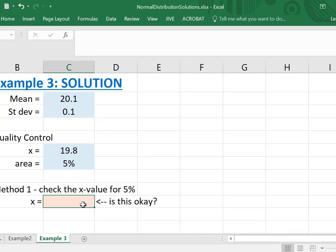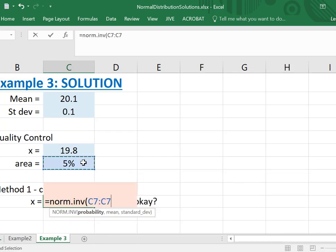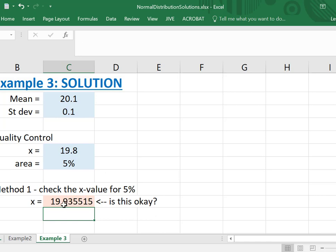So in Excel, we use the norm.inv, grab that 5%, the 20.1 for the mean, the 0.1 for the standard deviation. And that gives us 19.9355. Now is this okay? Let's have a look.